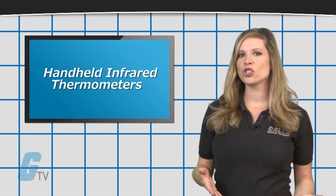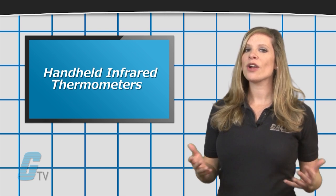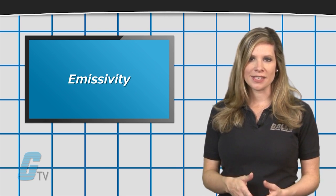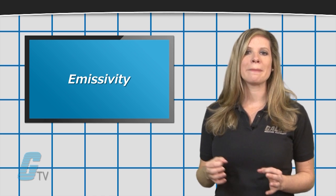handheld IR thermometers often struggle when measuring reflective objects. This is a characteristic known as emissivity, which describes an object's ability to absorb or emit energy.